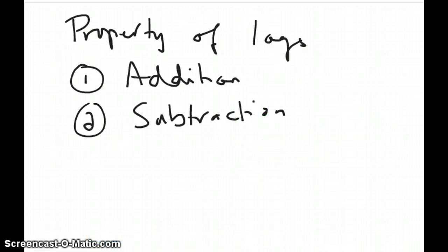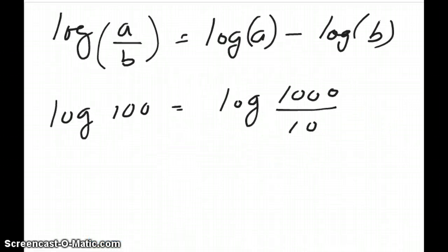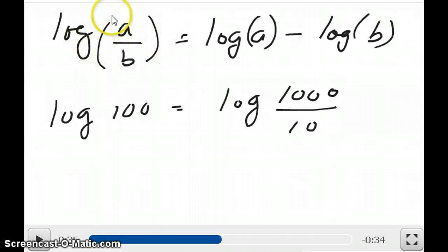The second property is the subtraction property. In this case, if the argument of a log is a number divided by another number, it's the same as taking a difference of the two logs of the numerator and the denominator. So this is written as the log of a over b is equal to the log of a minus the log of b.